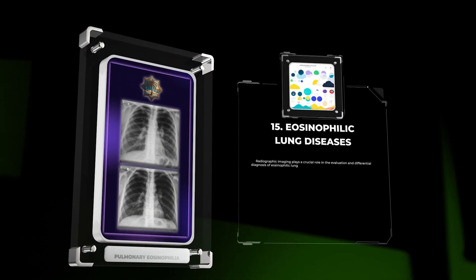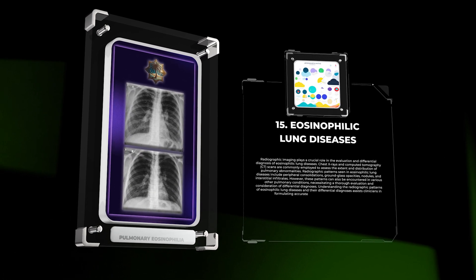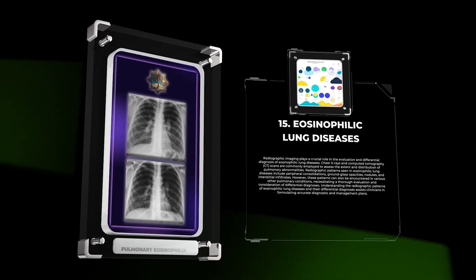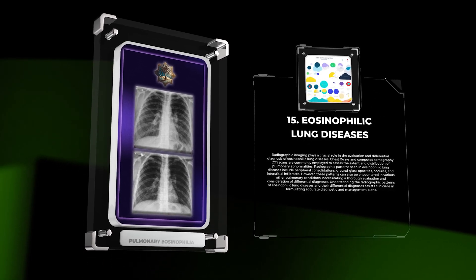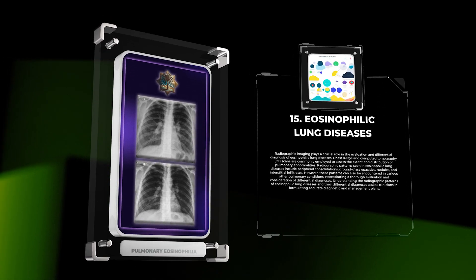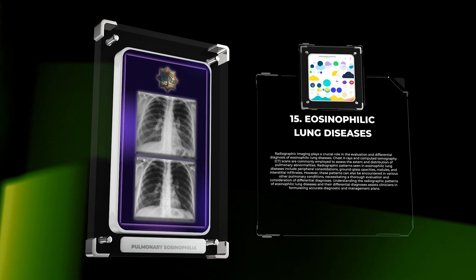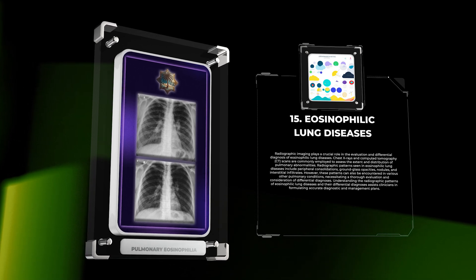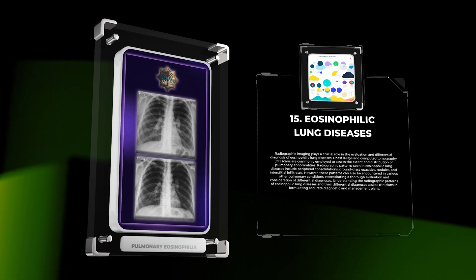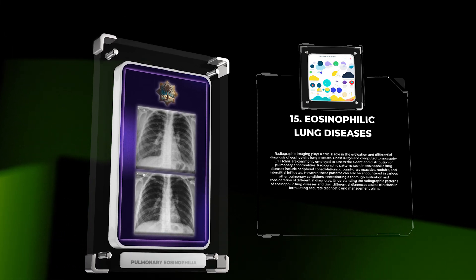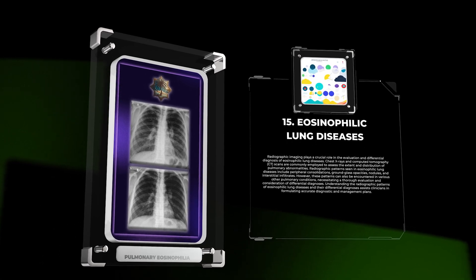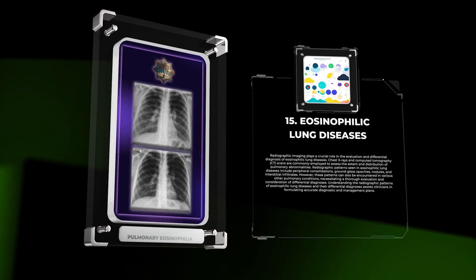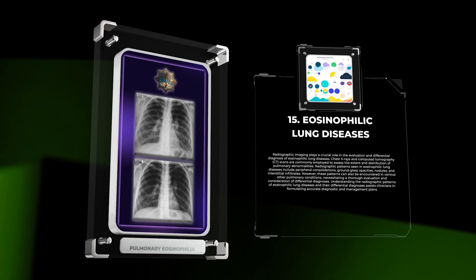Radiographic imaging plays a crucial role in the evaluation and differential diagnosis of eosinophilic lung diseases. Chest X-rays and computed tomography scans are commonly employed to assess the extent and distribution of pulmonary abnormalities. Radiographic patterns seen in eosinophilic lung diseases include peripheral consolidations, ground glass opacities, nodules, and interstitial infiltrates.